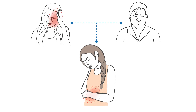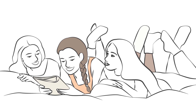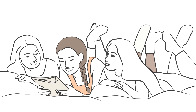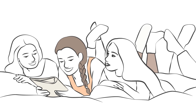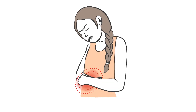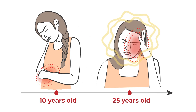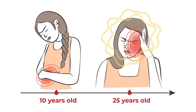Children with a family history of migraine are more likely to develop this condition. Abdominal migraine may spontaneously resolve for some, but unfortunately, a large number of those with abdominal migraine will develop another form of migraine later in life.